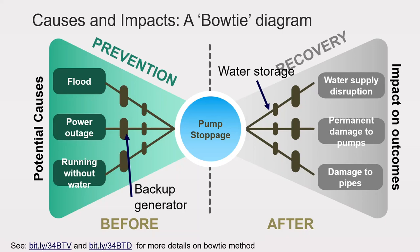This method is called the bowtie diagram. We usually do not stop at one level of causes or impacts but look at chains of events. For example, a flood can cause the pump to stop — and then what causes the flood is our next question. We do the same for the impacts. Such detailed analysis is beyond the scope of this lesson, but references have been provided.